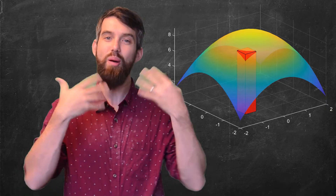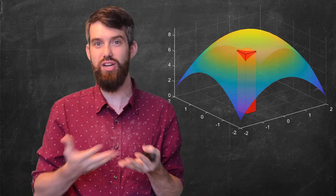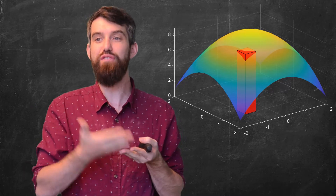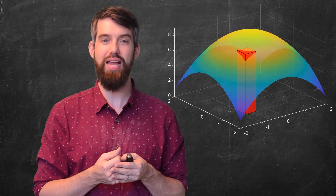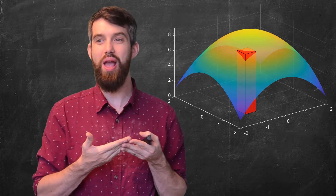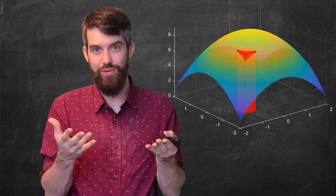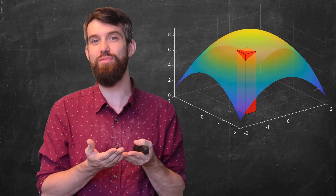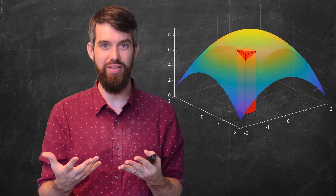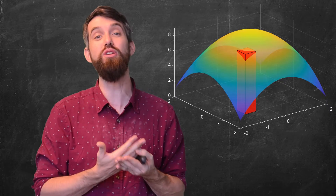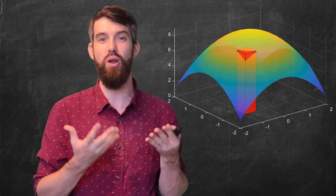If we zoom in on one particular little box, notice that at some points the box is higher than the graph of the function, and at other points the graph of the function is higher. So there's a little error: where the box sticks above the surface you're adding too much, and where it's beneath the surface you're adding too little. But as you increase the number of subdivisions and the size of each box gets smaller, these approximation errors get smaller and smaller.